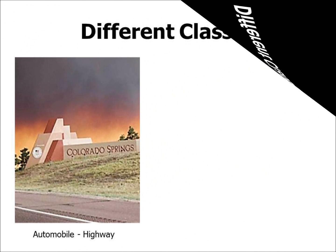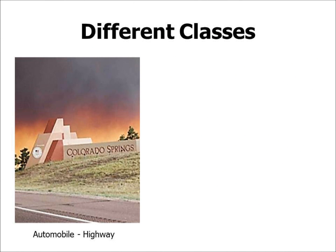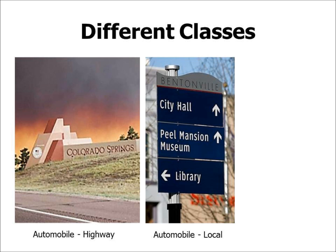There are different classes of wayfinding markers. The first example is an automobile gateway entrance marker from Colorado Springs, which evokes themes of the mountains and southwestern pastel colors. Next is an automobile marker appropriate for a local street, also viewable by pedestrians. Here's an example where the bottom portions are rectangular but the top has a curved feature — that would fit TxDOT guidelines. That example is from Bentonville, Arkansas.